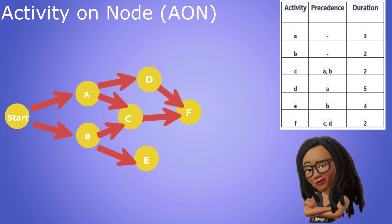There are no more activities so we can go ahead and connect F to a project end node. E does not have any activities after it. So we can go ahead and connect it to the end node as well.